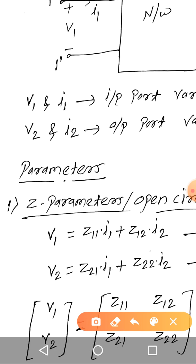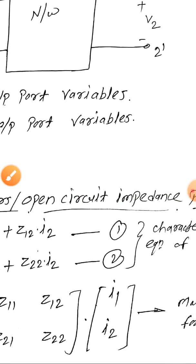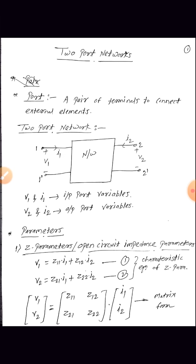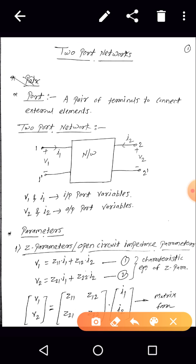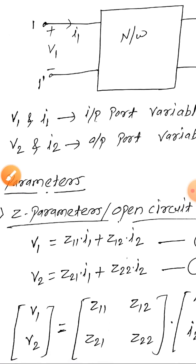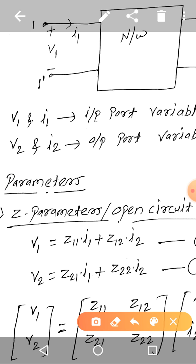Let us first discuss the Z parameter. The Z parameter is also known as the open circuit impedance parameter. Z parameters are the parameters which give the expression for port voltages — that is V1 and V2 — in terms of the port currents, that is I1 and I2.